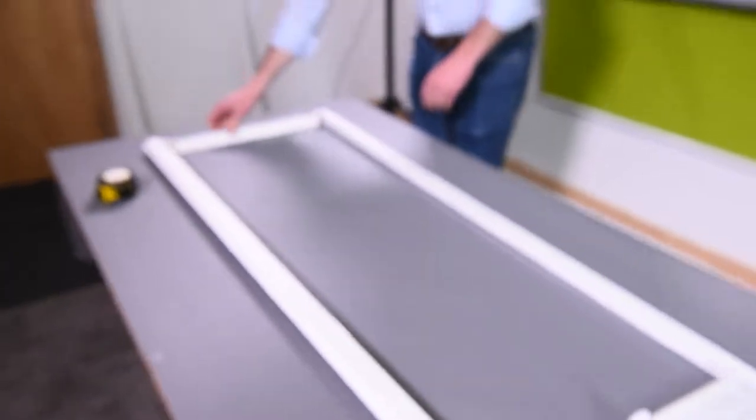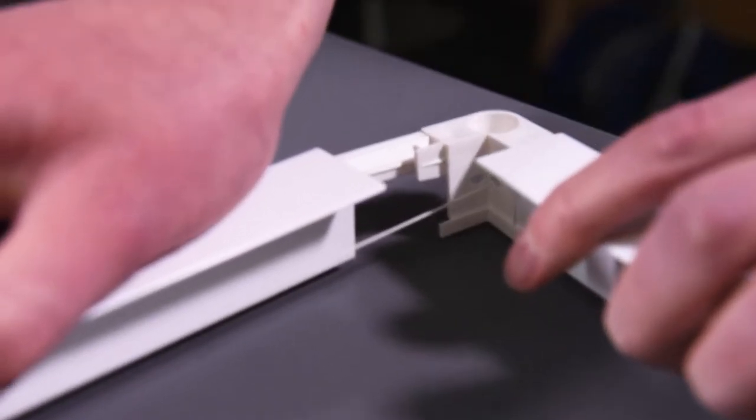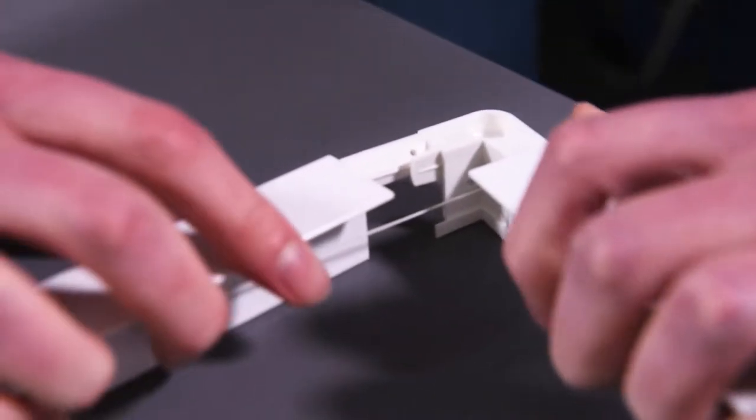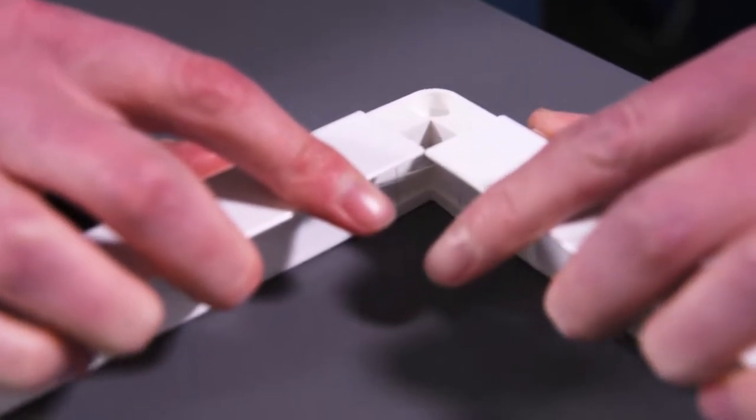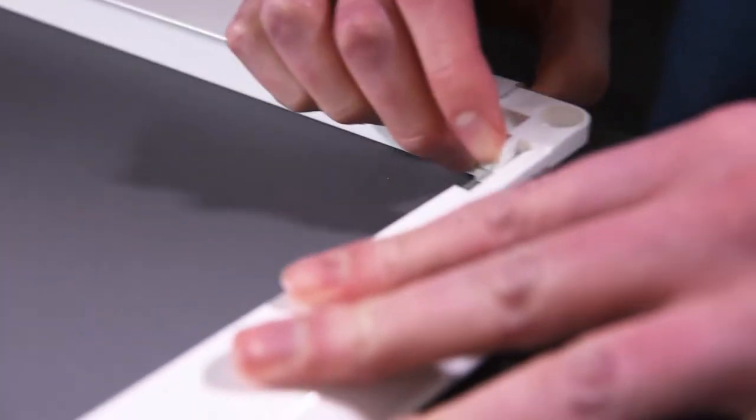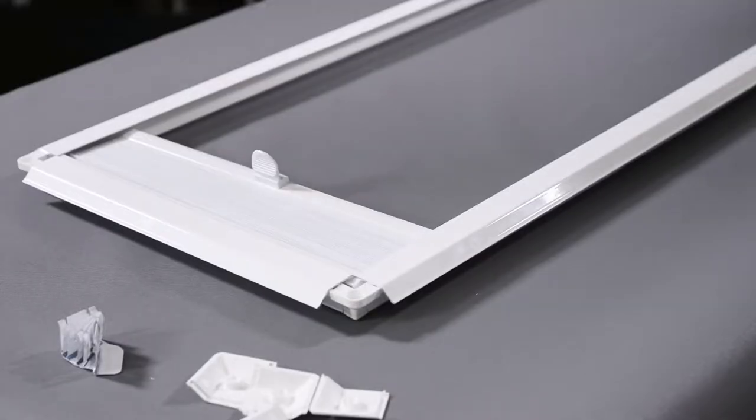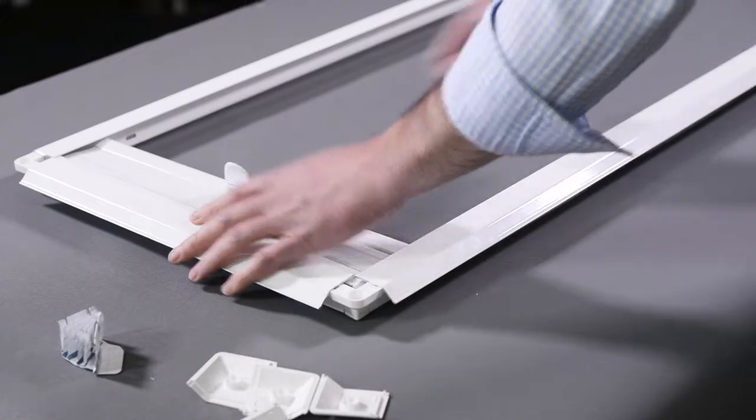So we come around here and now this could be a little bit tighter because obviously the blind is now under tension, but it should go in and then this last one. And that pops in there, so you can see we've got all four rails clipped together now.